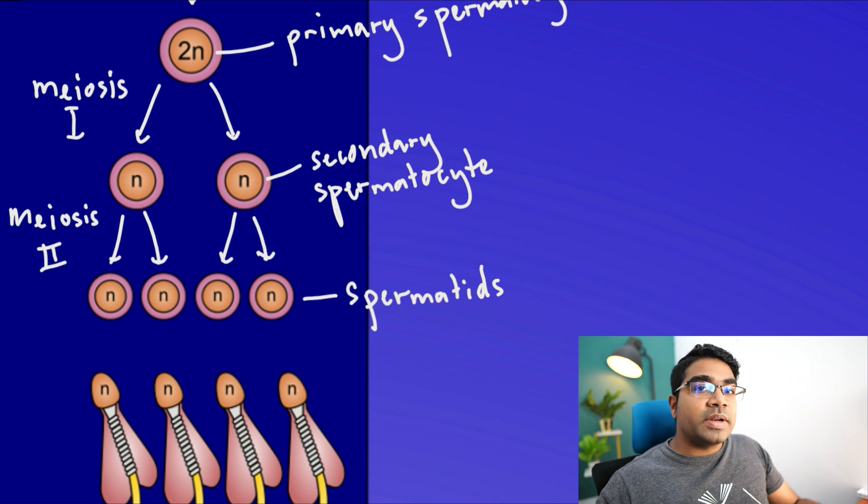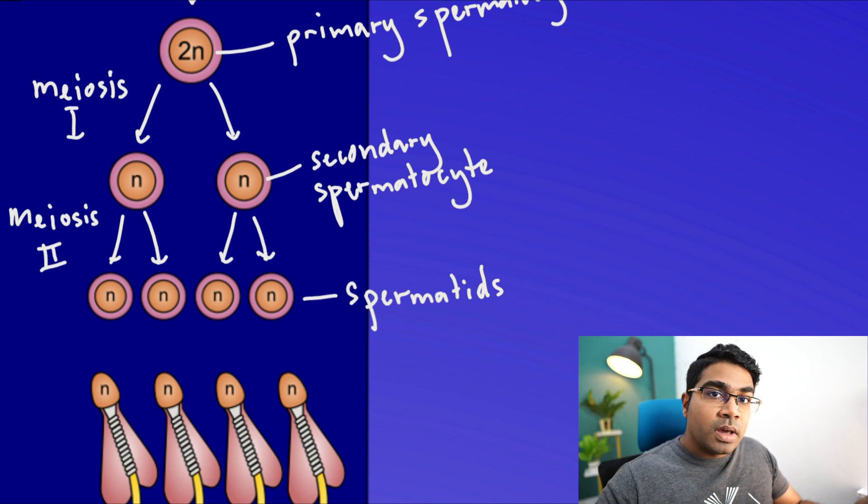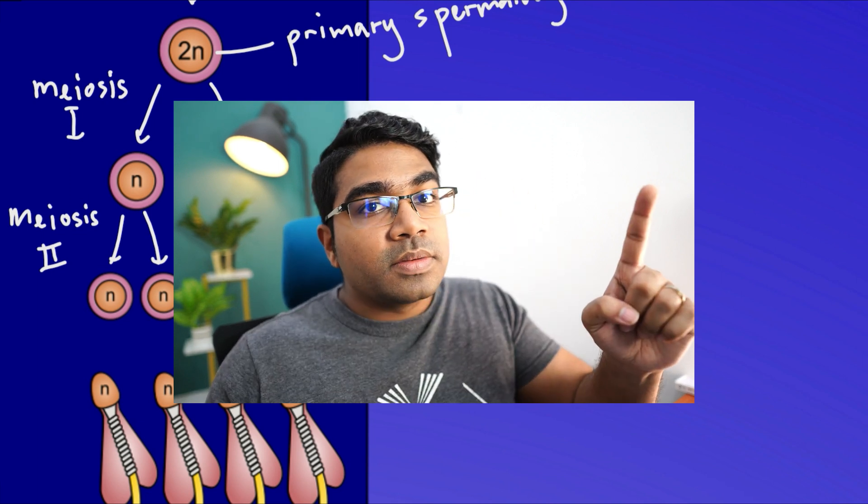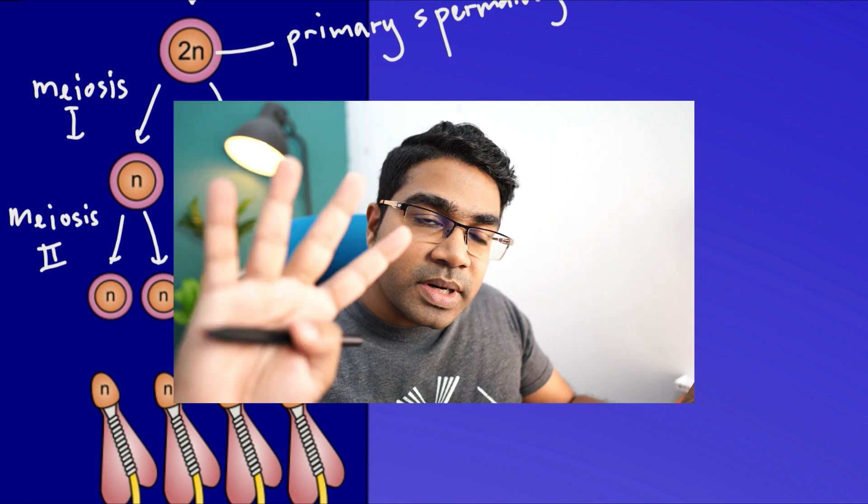Since each secondary spermatocyte produces two spermatids, we have a total of four spermatids. We started with one spermatogonium and now we have four spermatids.